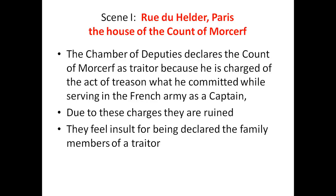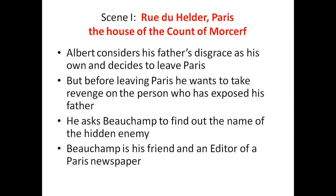Due to these charges, the family feels insulted for being declared members of a traitor's household. Albert considers his father's disgrace as his own and decides to leave Paris. He says: 'My father's disgrace is mine. I dare no longer bear the name of myself — the name of Morcerf is dragged down into the mire. I shall change my name and leave Paris.'